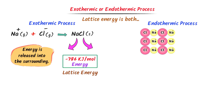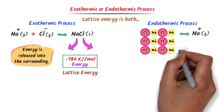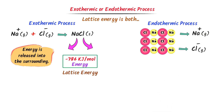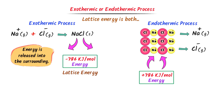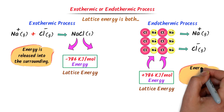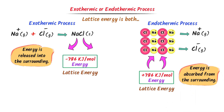Secondly, consider this lattice of sodium chloride — this three-dimensional structure of sodium chloride. Now I am interested to break this lattice into sodium ions and chlorine ions. I will give the same amount of energy which it has already released into the surrounding — positive 786 kilojoules per mole energy — to break it into sodium ions and chlorine ions. Remember that this energy is also called lattice energy. This time, energy is absorbed from the surrounding, so we say lattice energy is an endothermic process.